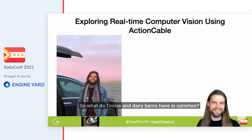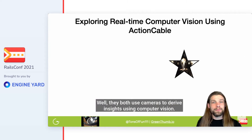So what do Teslas and dairy barns have in common? Well, they both use cameras to derive insights using computer vision.